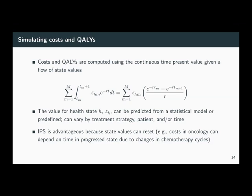The time interval point is related to one of the advantages of individual level models — it's not just disease progression that can be clock reset, but your state values can be as well. One example in oncology is where patients transition to a progressed state, switch to chemotherapy, and chemotherapy costs vary over time due to chemotherapy cycles. You can really only model that in the individual level model; in a cohort model you could approximate it with tunnel states, but it's more burdensome.